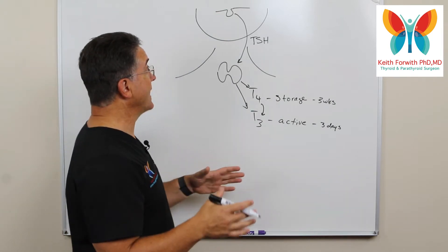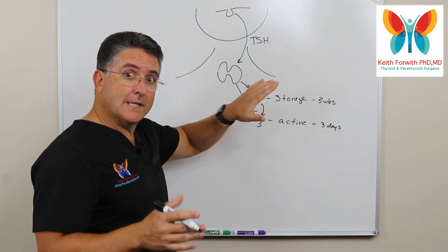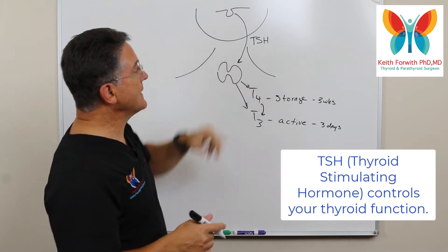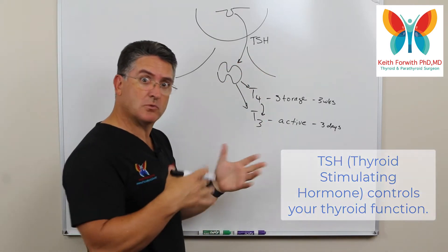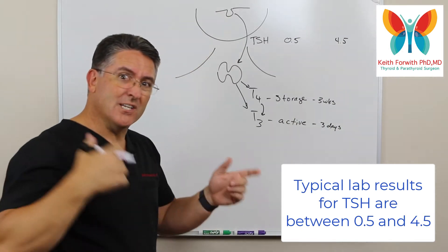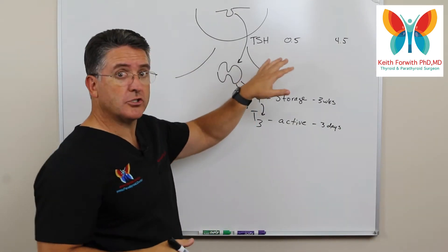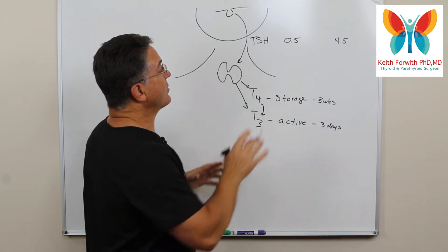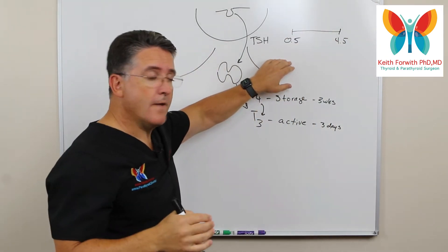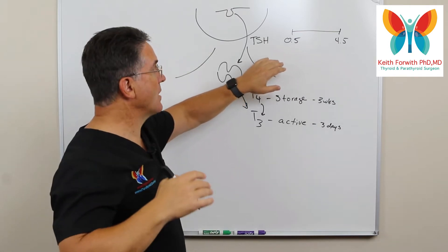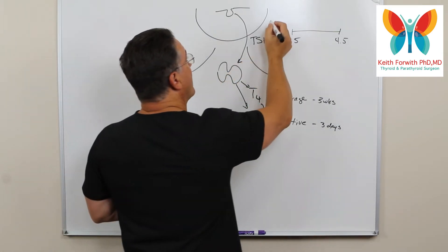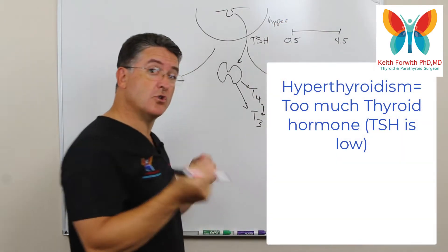One where the thyroid gland is underactive. Thyroid function is controlled by thyroid stimulating hormone, and if you look at the labs, the typical values that most labs would say are normal go between 0.5 and 4.5. On this scale, when TSH is low, the brain is thinking there's not a shortage of thyroid hormones, so we don't need to stimulate it — and so on this end of the spectrum, what we find is hyperthyroidism, or too much thyroid hormone.